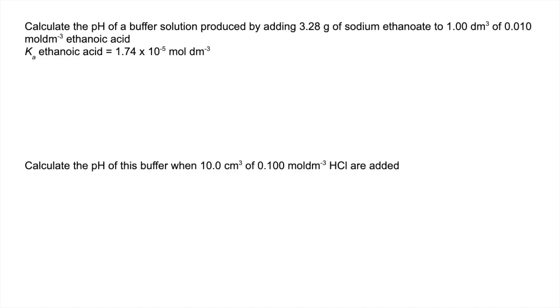So the first thing we need to do is work out the moles of salt, sodium ethanoate, that's being used. So mass over MR: 0.04 moles of salt. Now the volume is one decimeter cubed, so therefore the concentration of the salt will also be 0.04.